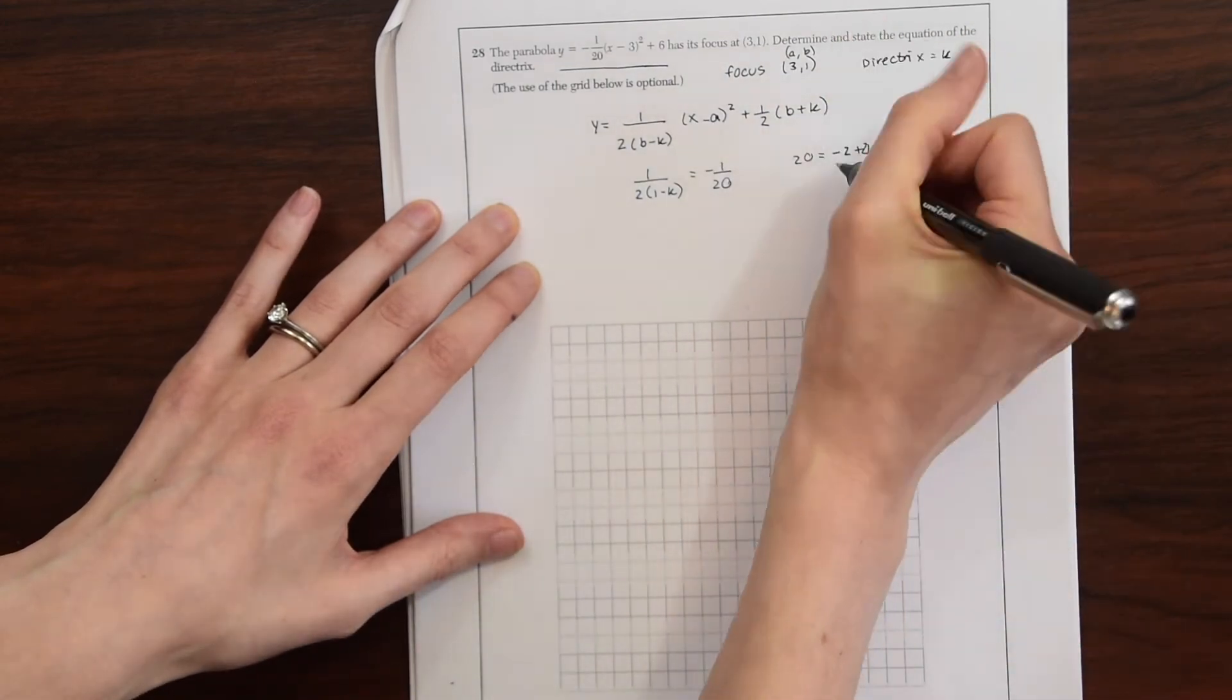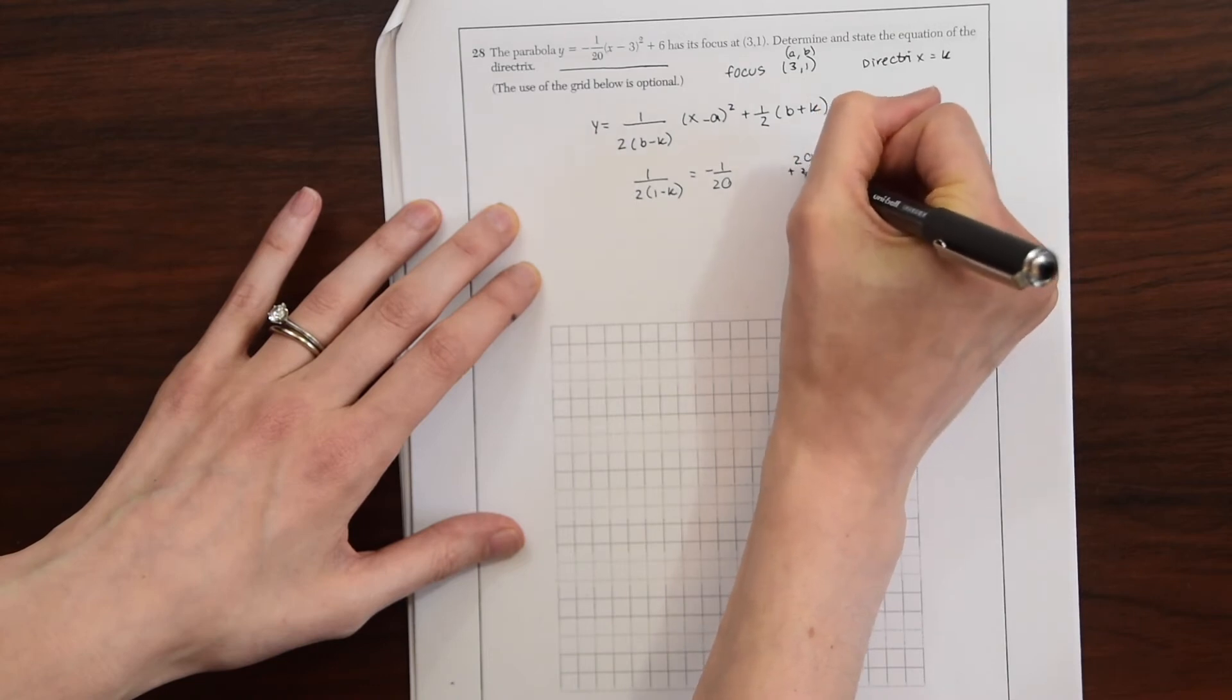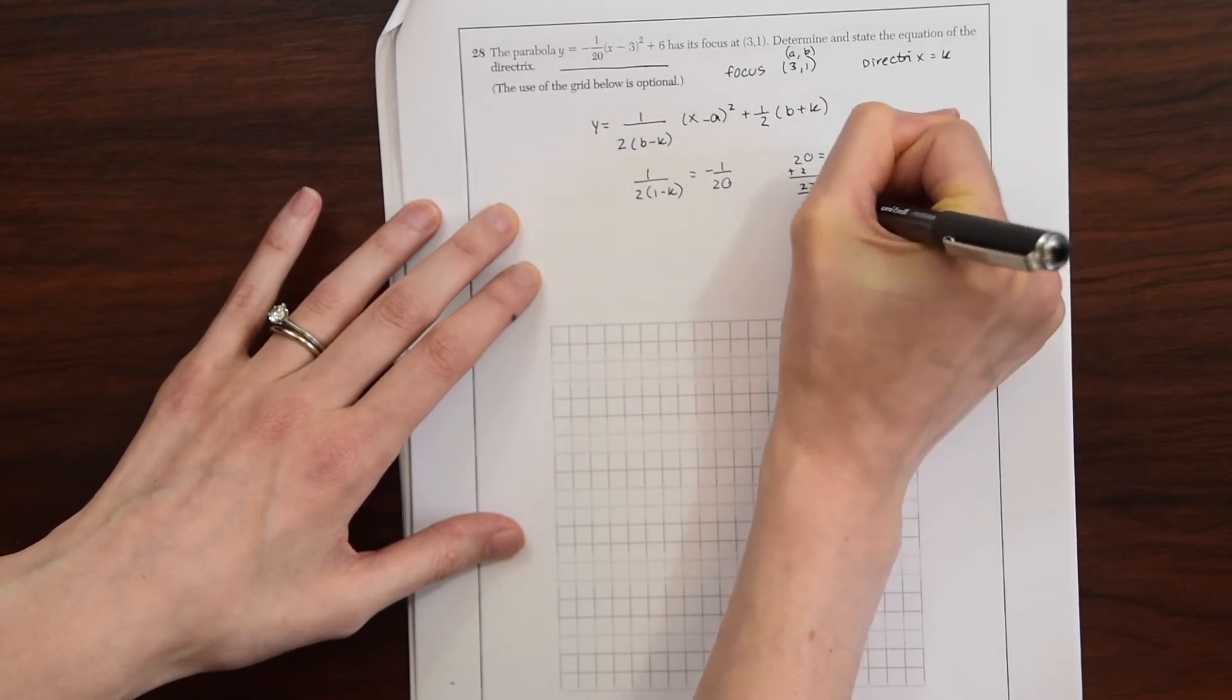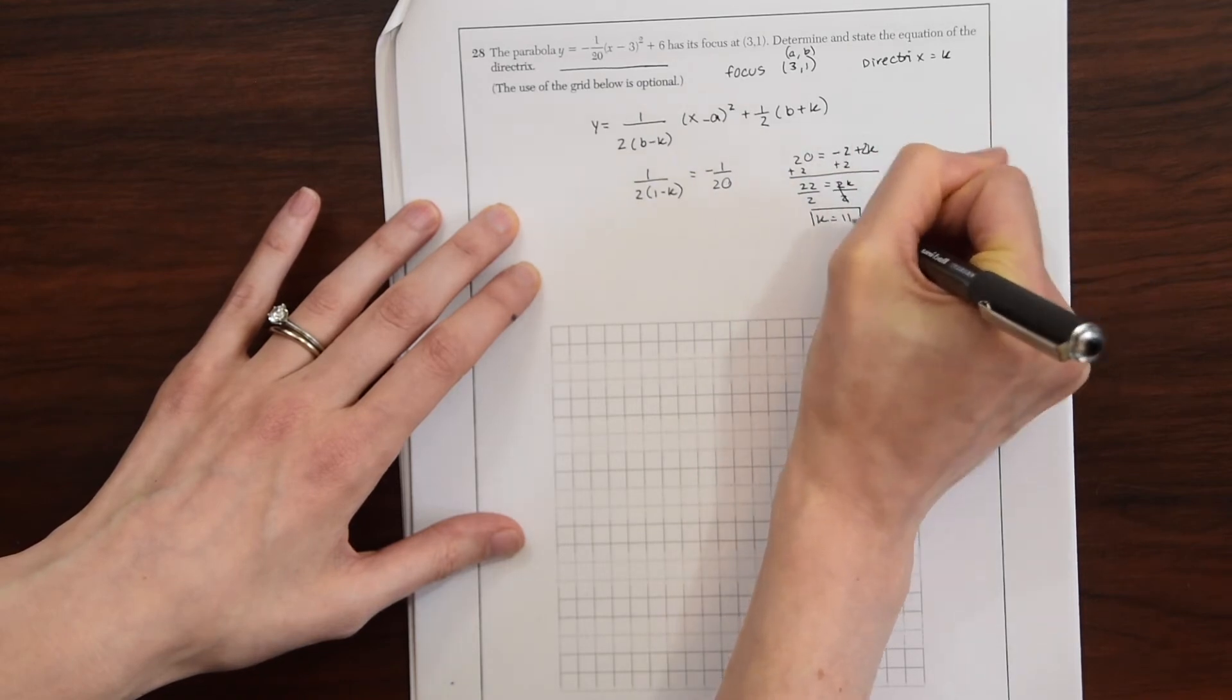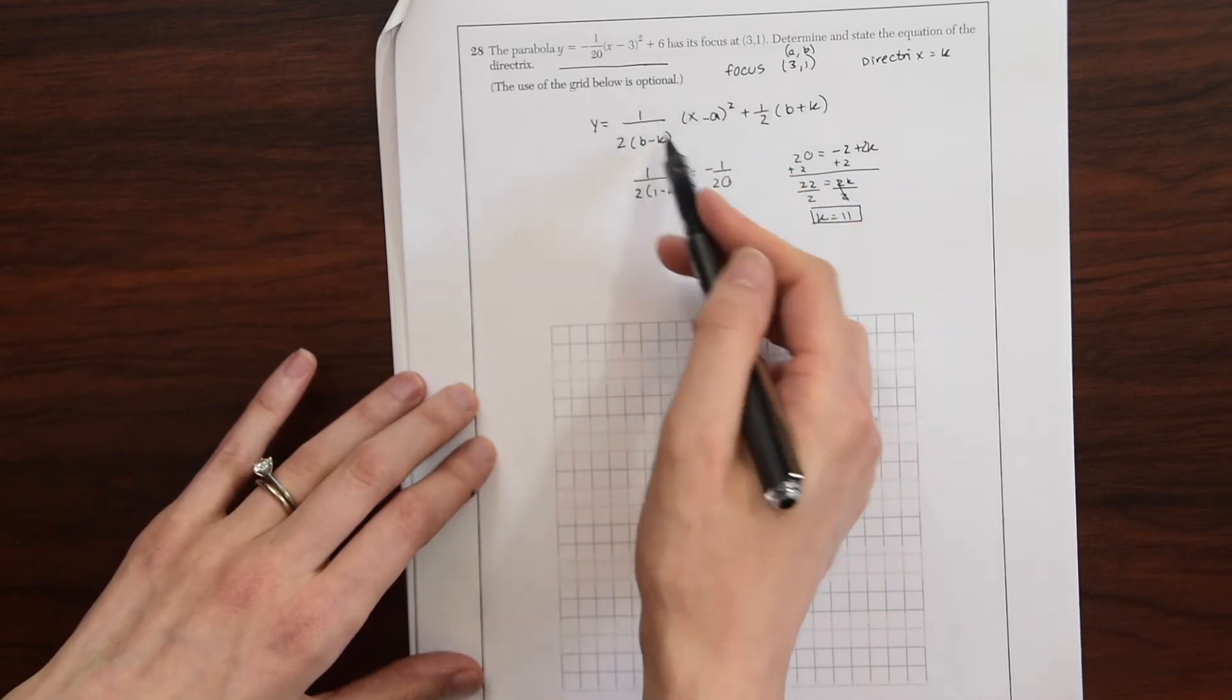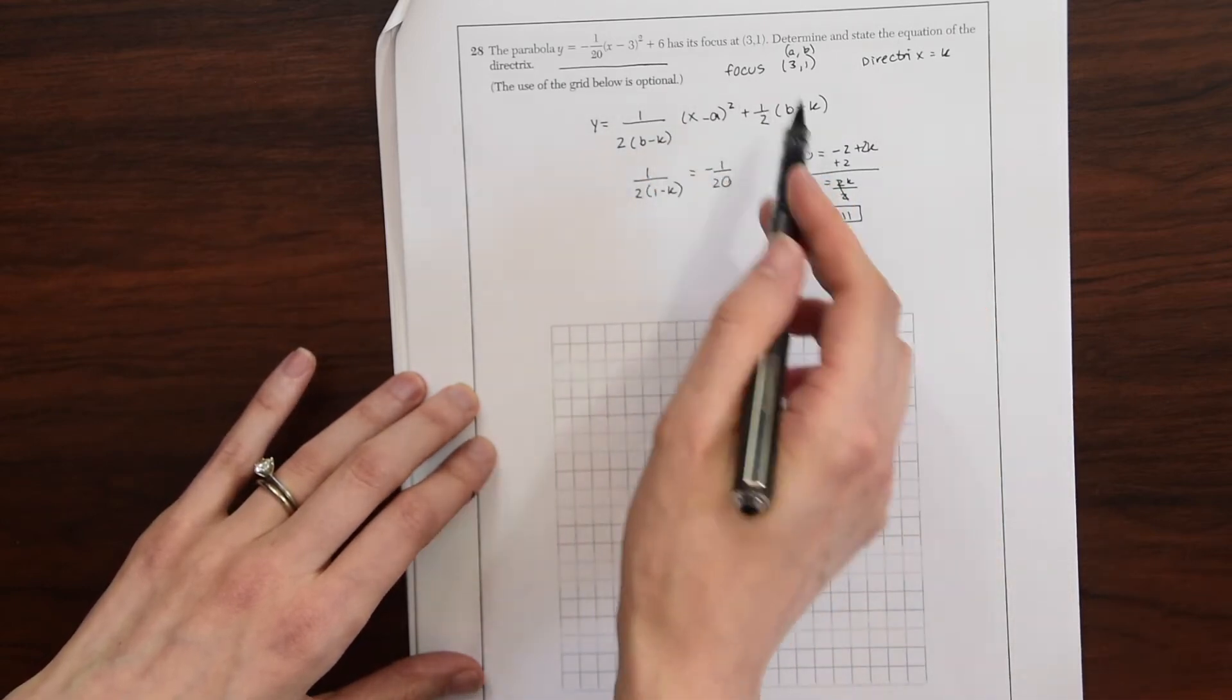So now just do a little algebra. We'll bring this over and we get 22 equals 2k, divide 2 on both sides, and we get k equals 11. So that's one way of getting it. It involves a little algebraic manipulation.